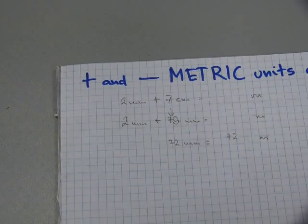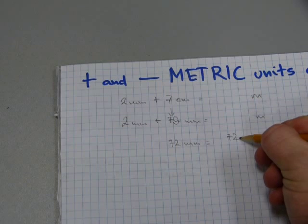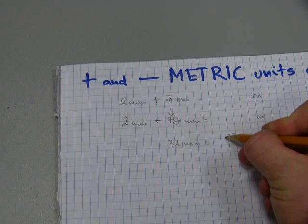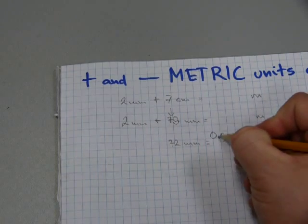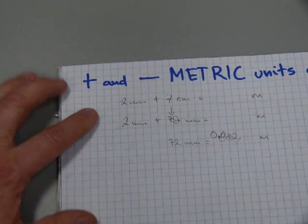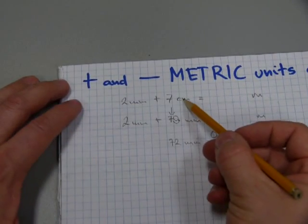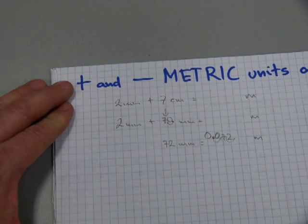So, 72, please remember, is the same as 72.0. So, the decimal dot starts there. And that's one, two, three places there. And then we add zeros as needed. So, the final answer is 2 millimeters plus 7 centimeters equals 0.072 meters.